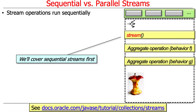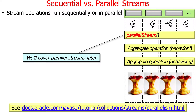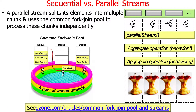If you change sequential stream to parallel stream, all of a sudden you've got a whole bunch of threads running. A parallel stream takes its input, splits it up into multiple chunks, and then uses the common fork-join pool in order to process these chunks independently on the different processor cores. That's what's really happening underneath the hood.